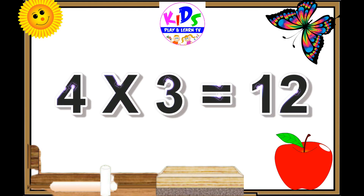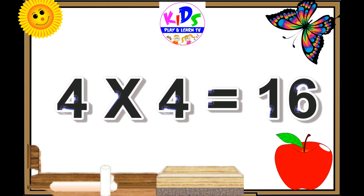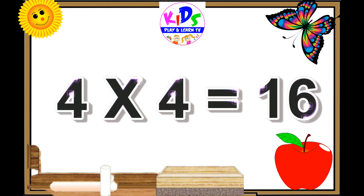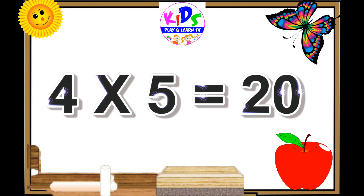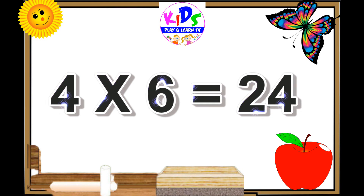Four threes are twelve, four fours are sixteen, four fives are twenty, four sixes are twenty-four.